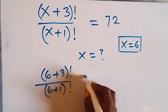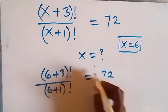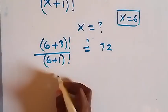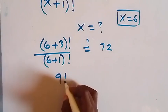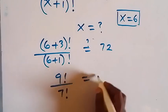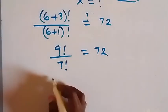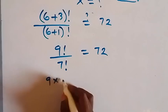factorial, that's 7 factorial. If this equals 72, we have 9 factorial over 7 factorial. 9 factorial can be written as 9 times 8